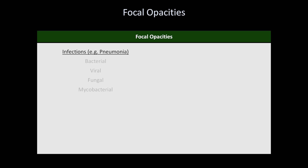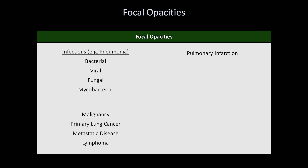What are some etiologies of focal opacities? Obviously, infections — that is, pneumonia — which can be bacterial, viral, fungal, or mycobacterial. There are malignancies, which can be primary lung cancer, metastatic disease, or lymphoma. Other etiologies include pulmonary infarction, pulmonary hemorrhage, vasculitis, and eosinophilic pneumonia. Infectious pneumonia is by far the most common etiology of focal opacities.